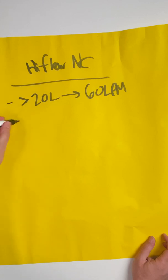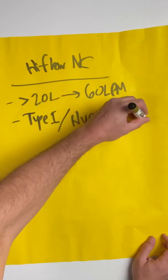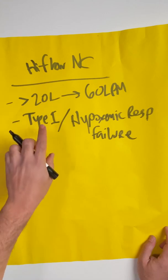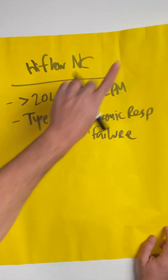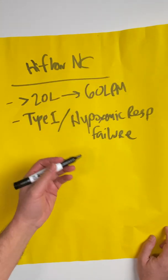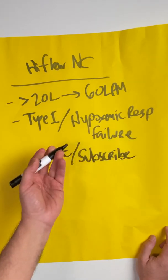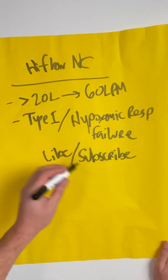High flow is only helpful for people who have a type 1 or hypoxemic respiratory failure. Do you need to brush up on your type 1 or type 2 problems? Go back to CritBit Season 1 with the video that's linked up here. And while you're at it, go ahead and like this video and hit the subscribe bell if you enjoy what you see.